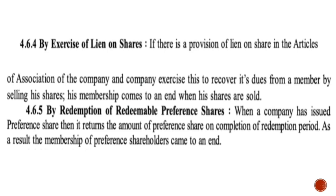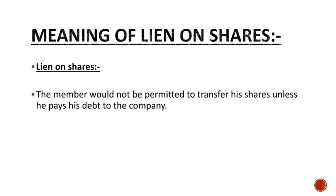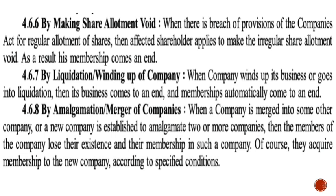Redeemable preference shares means that a fixed time period is set — for example, 3 years. After 3 years, the company repays the shareholder. Once the company repays the shareholder at the end of the fixed period, the person will no longer be a member. That is the fifth way termination of membership can occur.